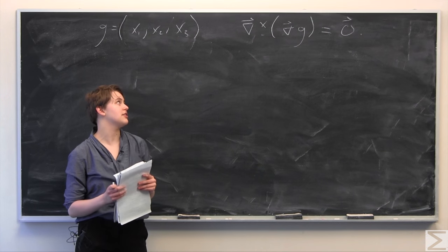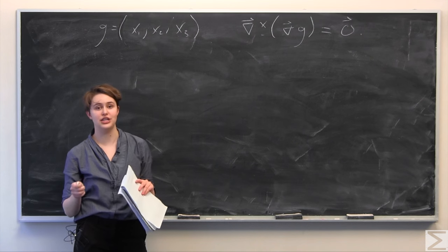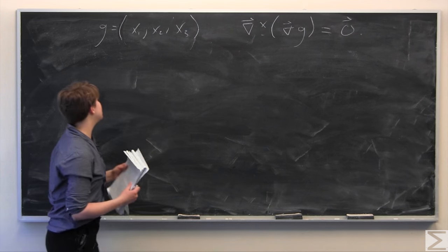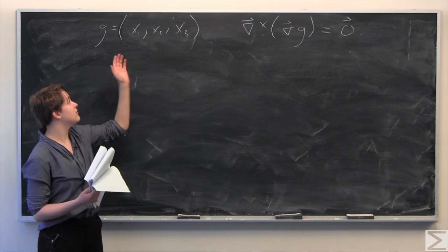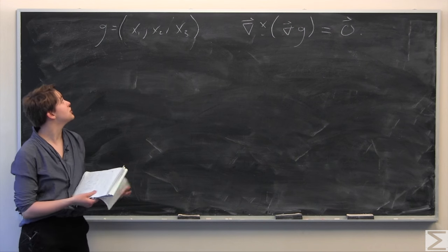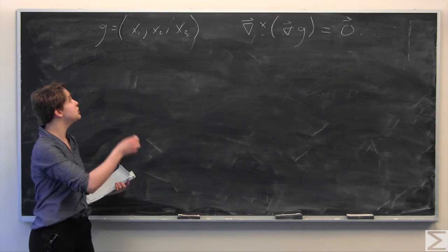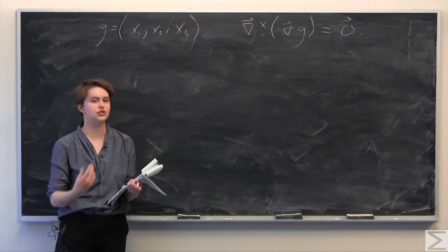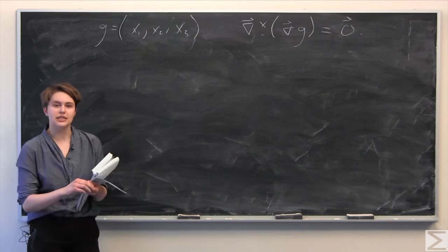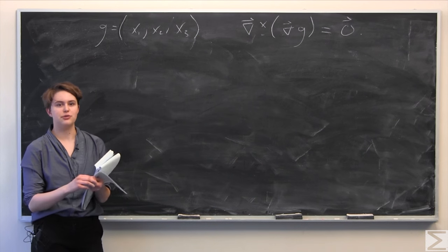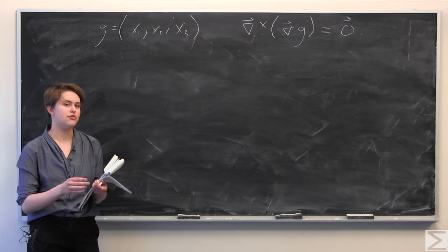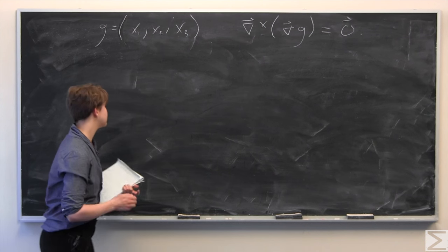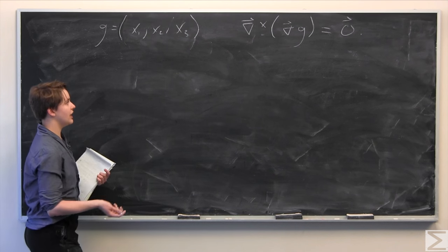that the gradient crossed with del g is equal to the zero vector, given some function g with components x1, x2, and x3, where g is a continuously differentiable function in R3 on some set s.